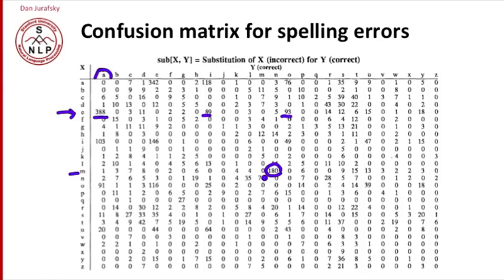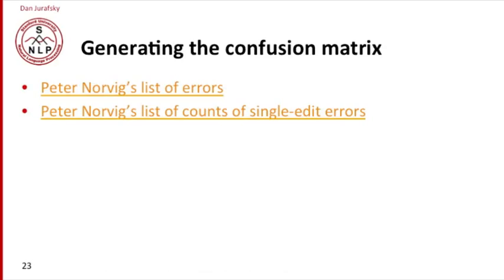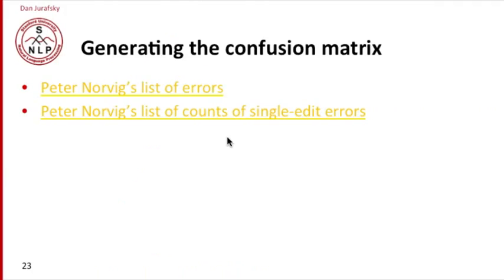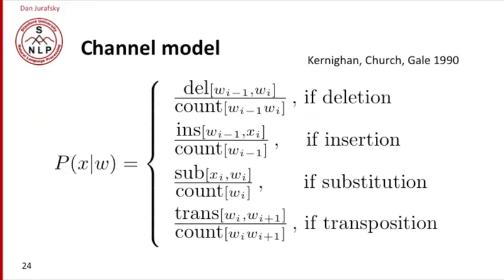Here's our set of confusion matrices. We compute four of them: one for deletion, one for insertion, one for substitution, one for transposition. This table comes from Kernighan et al, but you could also generate the table yourself. For example, Peter Norvig posts on his website a lovely list of errors. These are errors taken from Wikipedia and other places. From a set of errors like this, we can get a list of counts for every possible single edit error. From that we can build our confusion matrix.